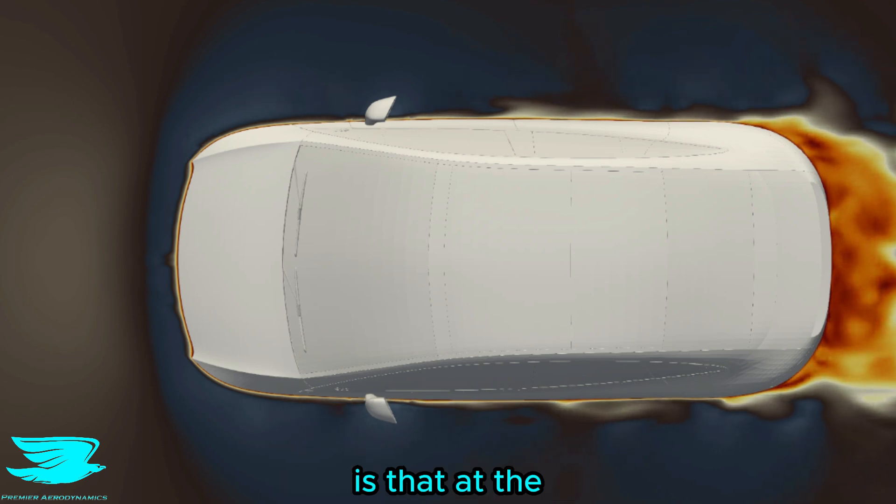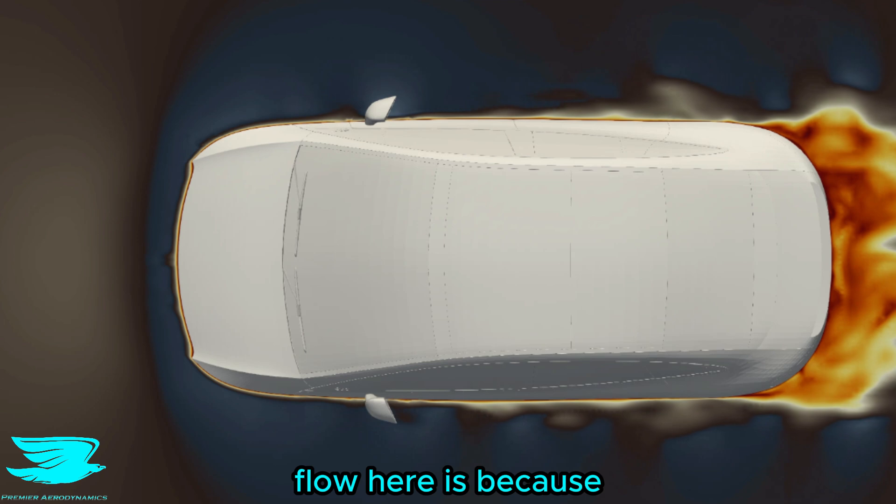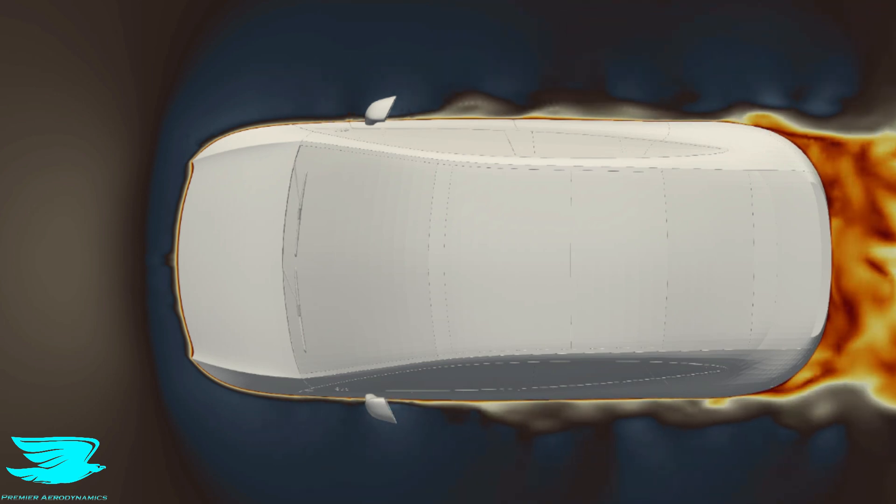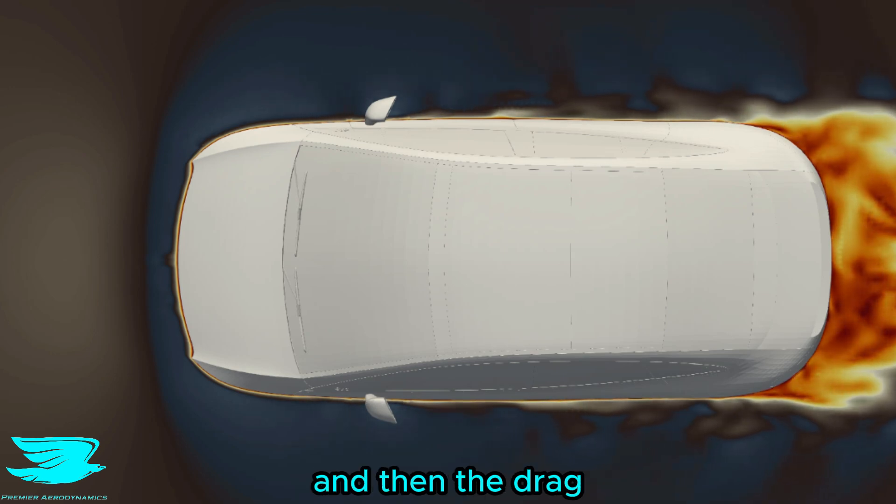Another important point is that at the front of the car, there is almost no red flow. And the reason why we would get red flow here is because this is where stagnating flow occurs. And that's because the flow hits the car and slows down. That increases the pressure at the front and then the drag.